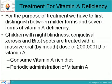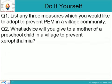For treatment, we need to distinguish between milder and severe forms of vitamin A deficiency. Treatment involves a massive oral dose of 2 lakh IU of vitamin A, along with periodic administration of vitamin A. Review questions: first, list any three measures to prevent PEM in a village community; second, what advice would you give to a mother of a preschool child in a village to prevent Xerophthalmia?